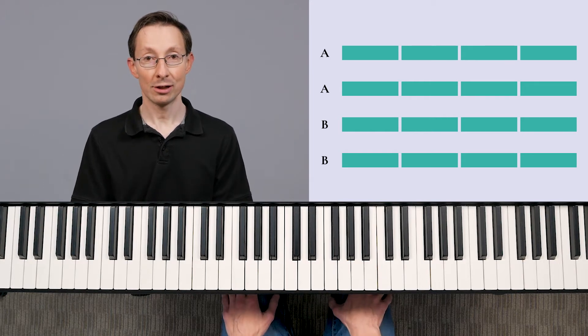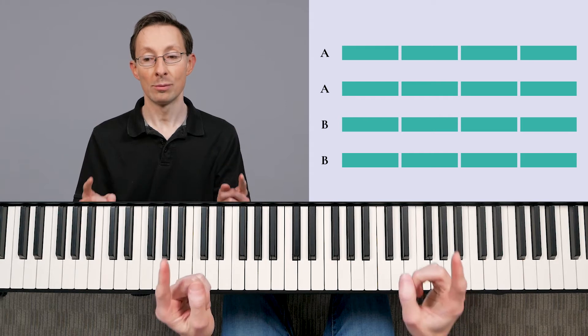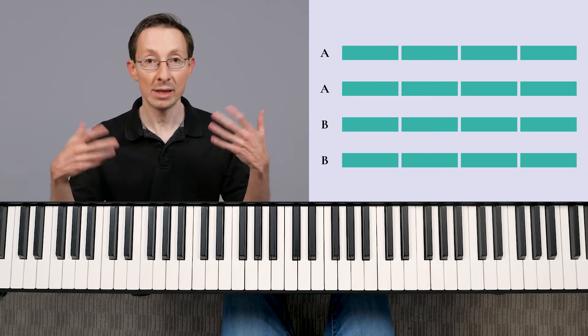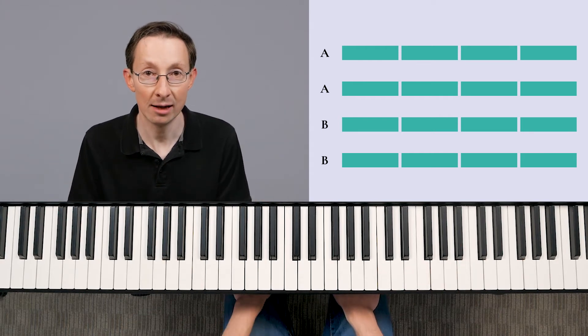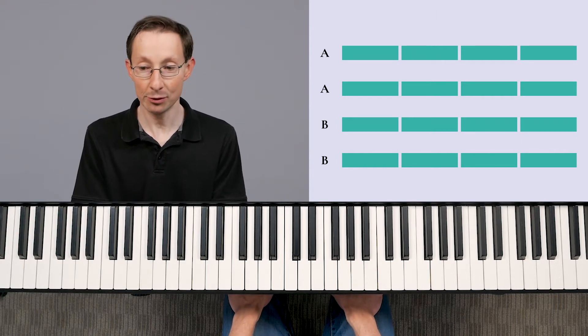And so the basic structure is A four bars, A four bars, B four bars, B four bars, and then you can repeat the entire form as many times as you want. Usually in a session context you repeat it two or sometimes three times.